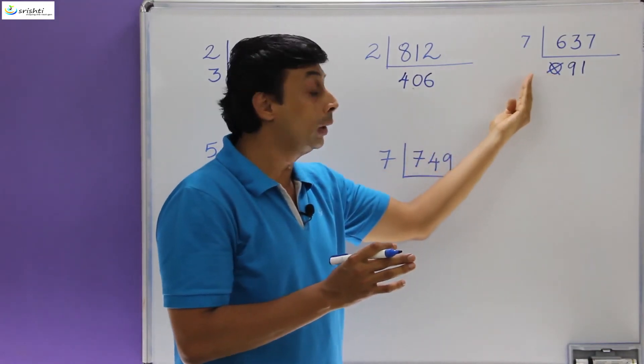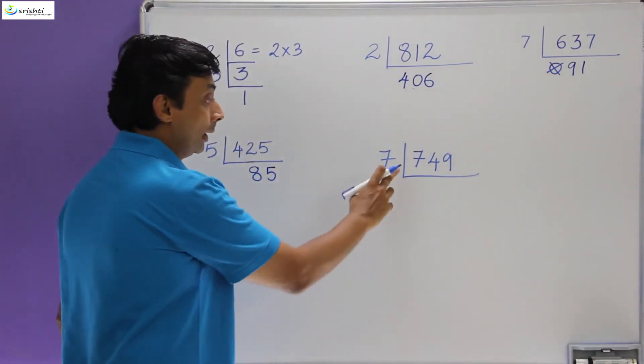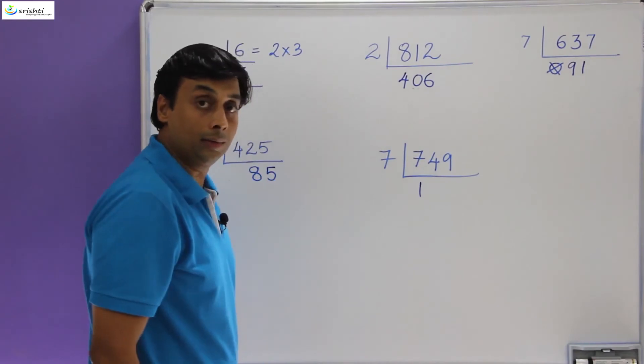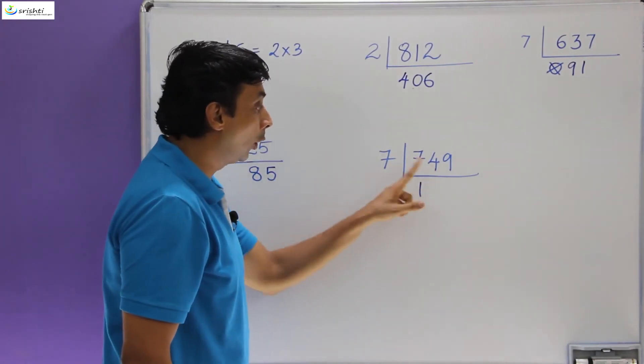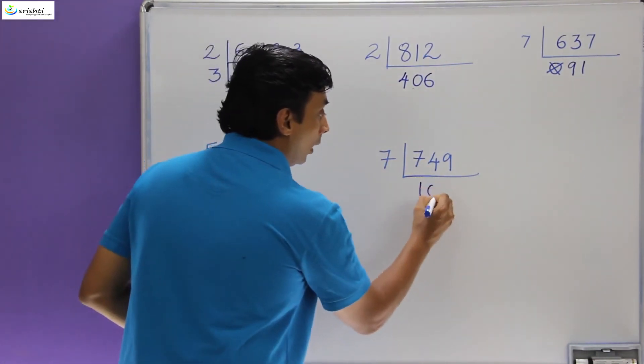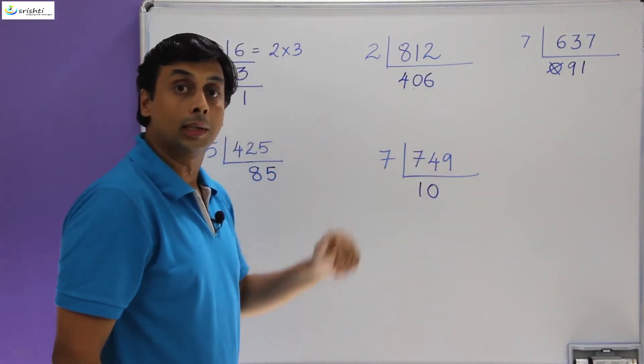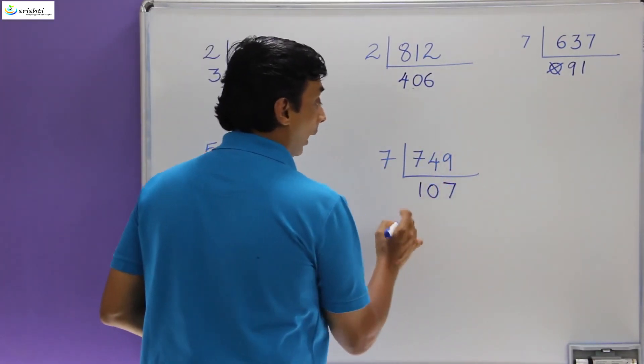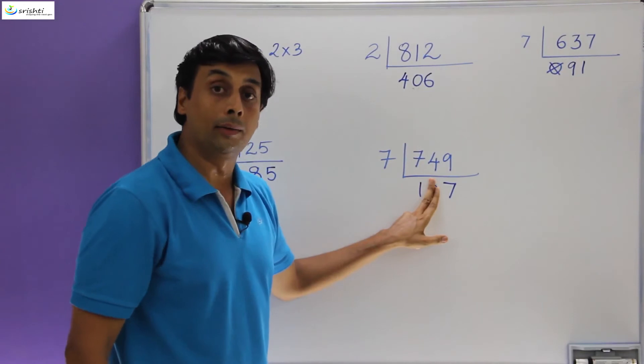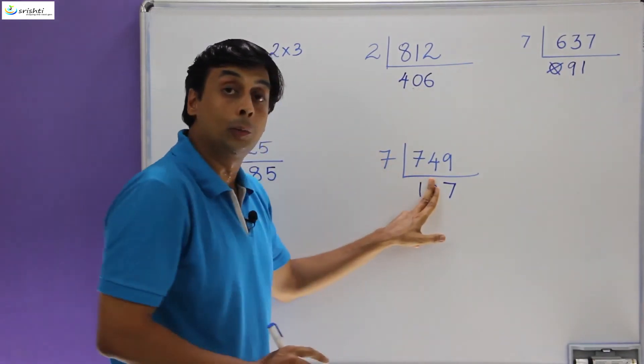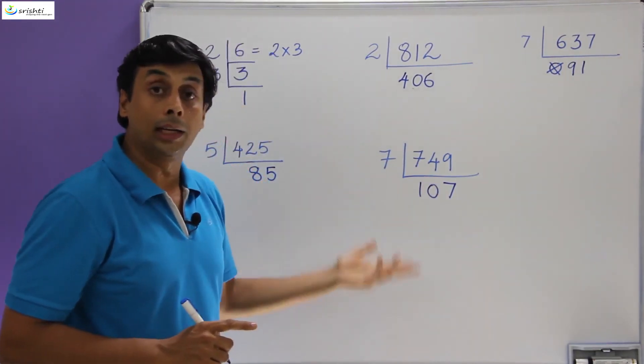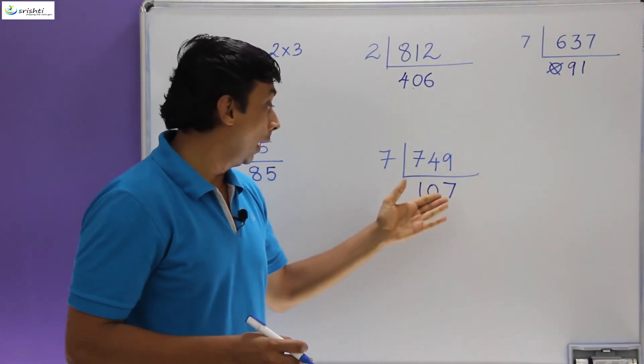Again, 749 is divisible by 7, yes. So 7 ones are 7. We have the 7 here. Now is 4 divisible by 7? No, it is not. So we should write a 0 here. And then you are allowed to take these two digits, which is 49. 7 sevens are 49, and the answer is 107. If you omit this particular 0, the answer would be 17, and 17 multiplied with 7 would be 119 and not 749.